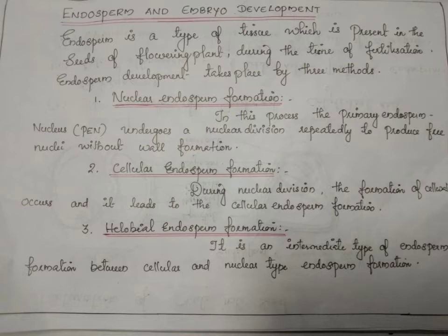In nuclear endosperm formation, there is only karyokinesis — nuclear division — but no cytokinesis, meaning no division of cell cytoplasm. It is the most common method. Here, the primary endosperm nucleus undergoes repeated mitotic division without cytokinesis. At this stage the endosperm is called free nuclear endosperm.